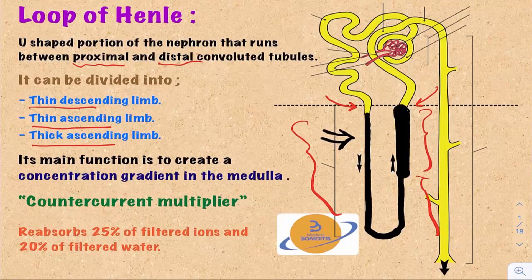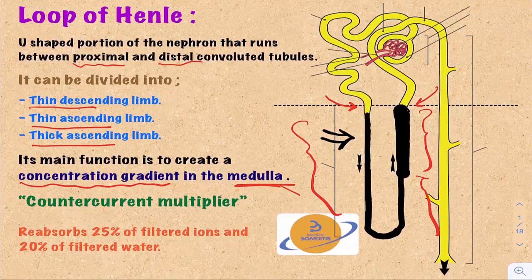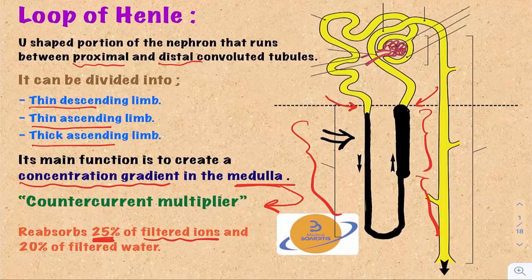The major function of the Loop of Henle is the creation of a concentration gradient in the medulla, through a process called counter-current multiplication. The Loop of Henle reabsorbs about 25% of the filtered ions like sodium and potassium, and 20% of the filtered water.